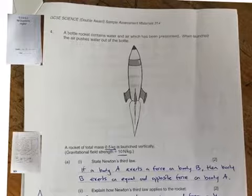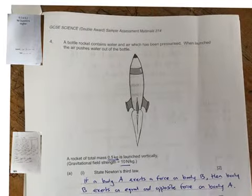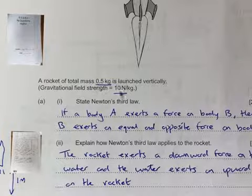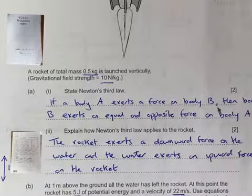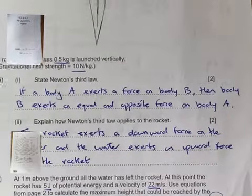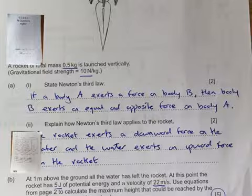Let's look at our first question. A bottle rocket contains water which has been pressurized, and when it's launched the air pushes water out of the bottle. It's got a mass of 0.5 kg. The gravitational field strength is 10 newtons per kilogram. State Newton's third law. If a body A exerts a force on body B, then body B exerts an equal and opposite force on body A. So if I push on the table, the table pushes back on me, and there's a resultant force of zero, so forces are balanced.